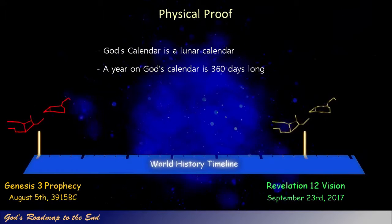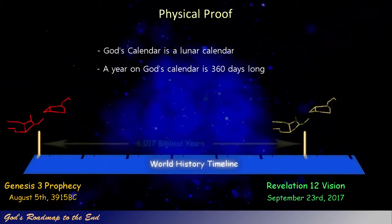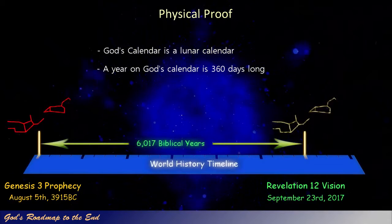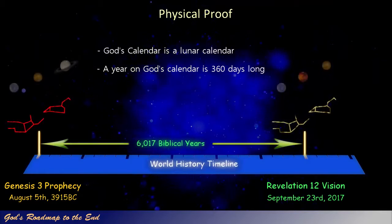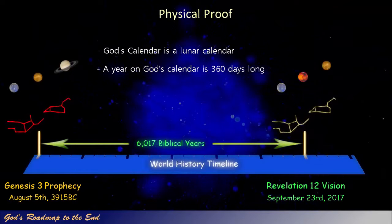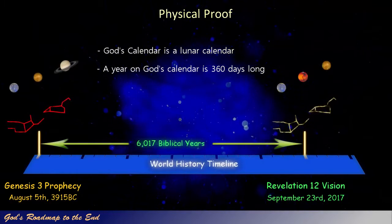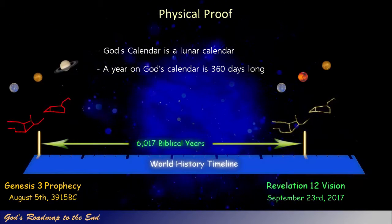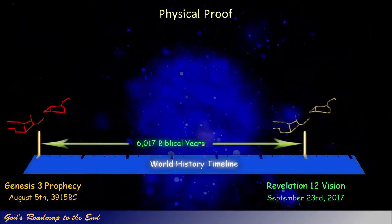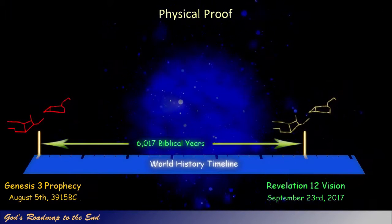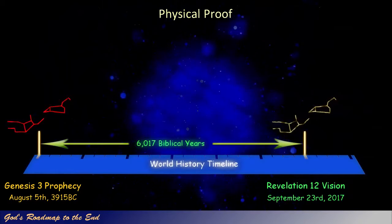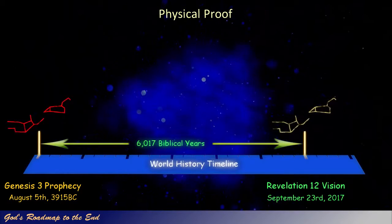There are then exactly 6,017 Biblical years between the prophecy given by God in Genesis 3 and the fulfillment of John's vision given in Revelation 12. The only difference between the two markers is the planets and their order that are added to the stars of the constellation Leo to make up the 12-starred crown on the head of Virgo. We now have two points on this timeline approximately 6,000 years apart, describing the time between the prophecy and the vision that Daniel was told to seal up, marking two very important events in the history of man on earth.